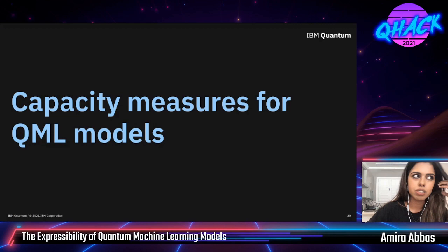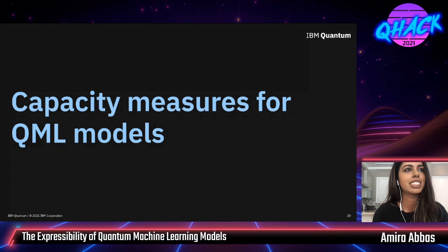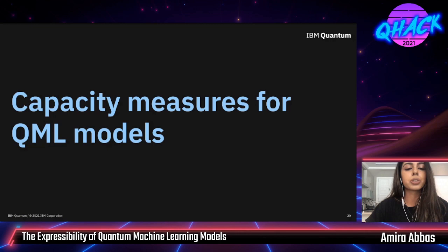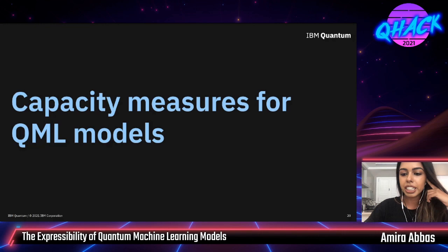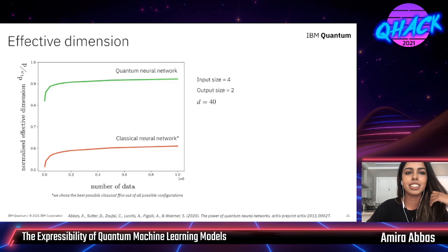Now, can we extend these capacity measures from classical machine learning theory to understand quantum machine learning models? This is ultimately what I want to get to. How can we use these to understand the power and expressibility of quantum machine learning models? The answer is: it really depends on the measure. In some cases it's fairly straightforward to extend, and in some cases not. One case where we have done it is the effective dimension.